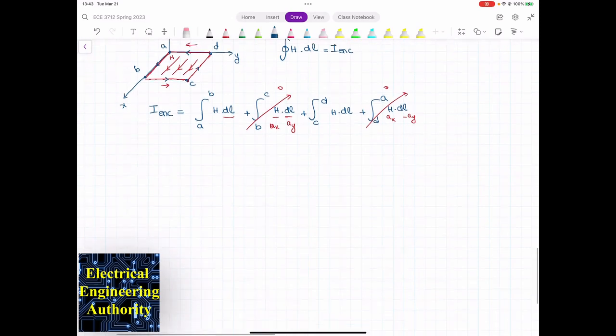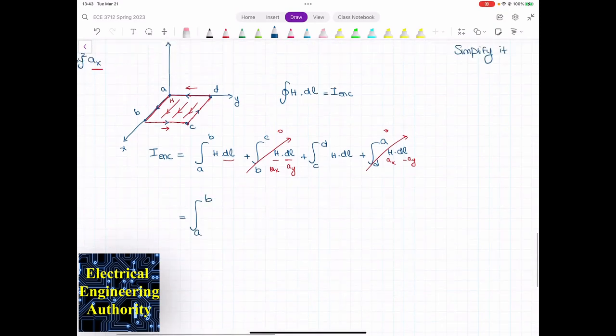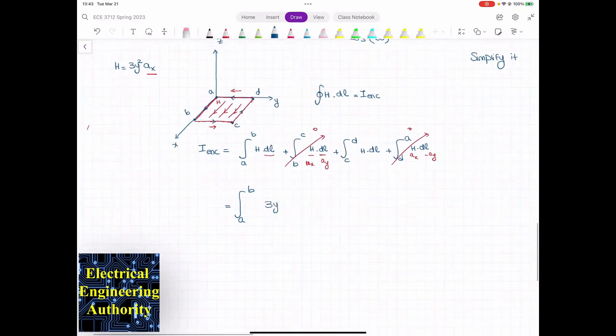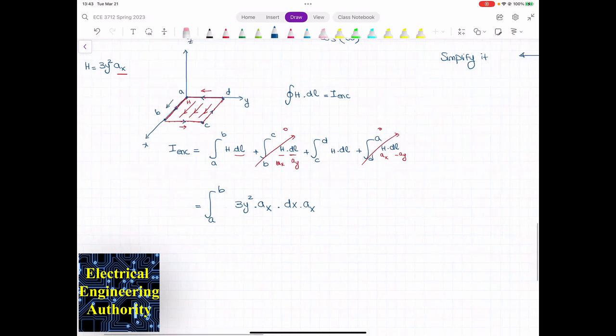Let's substitute for those two integrals. So that is integral from A to B - I'm going to keep it as A and B, and then I'm going to put the numbers there. H is 3y squared ax. dL, when I go from A to B, do you agree that it is dx ax? This one plus the integral from C to D of H is 3y squared ax multiplied by, or dot, dL. The dL that I have here is negative dy ay. Is that correct?